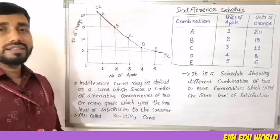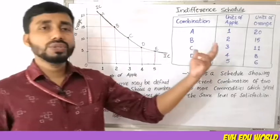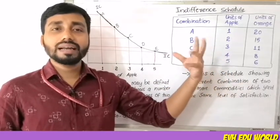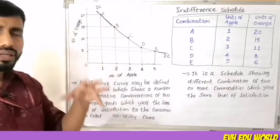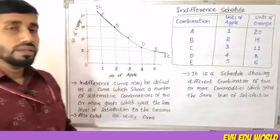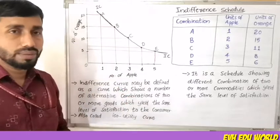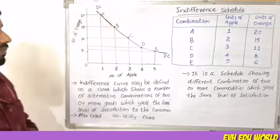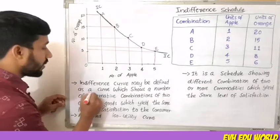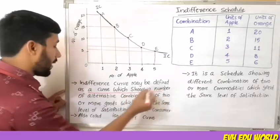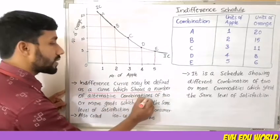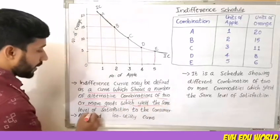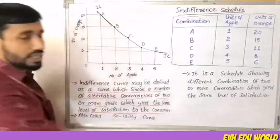What we call ordinal analysis means we cannot express a specific utility value. That is the ordinal concept. An indifference curve may be defined as a curve which shows a number of alternative combinations of two or more goods which yield the same level of satisfaction to the consumer.